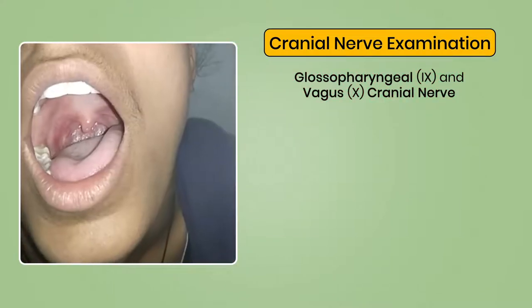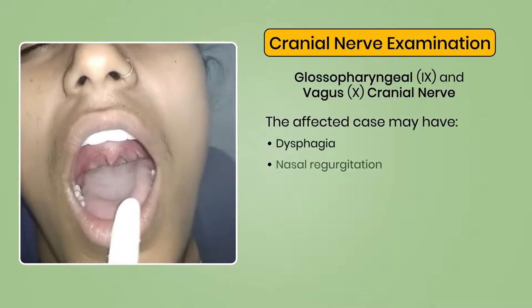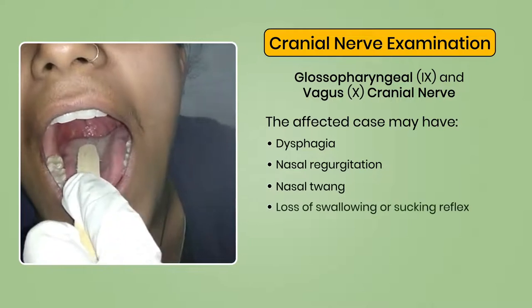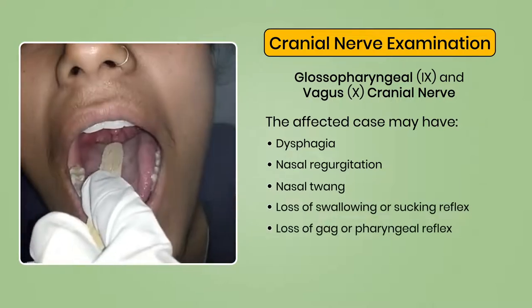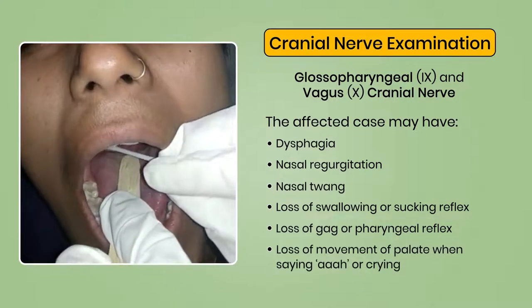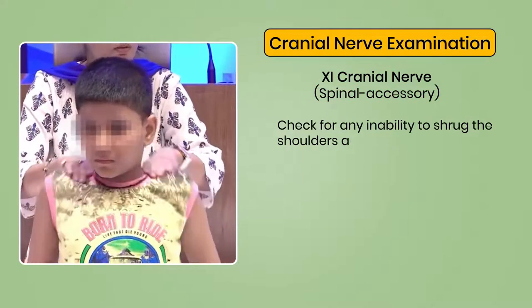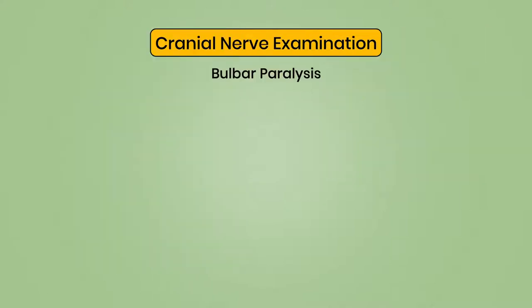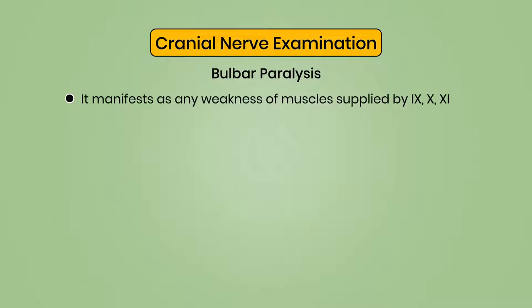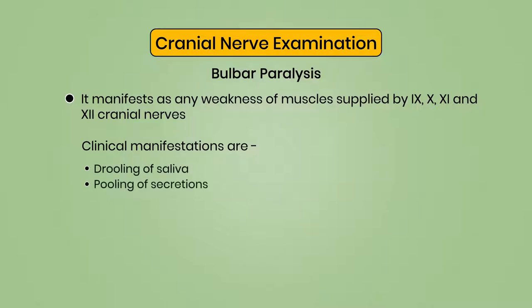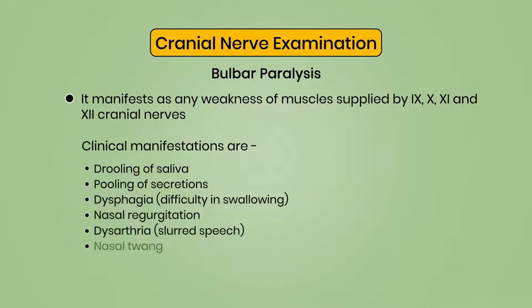Glossopharyngeal and vagus cranial nerves: the affected child may have dysphagia, nasal regurgitation, nasal twang, loss of swallowing or sucking reflex, loss of gag or pharyngeal reflex, and loss of movement of the palate when saying 'aaah' or crying. 11th cranial nerve or spinal accessory: check for inability to shrug the shoulders against resistance and weakness in rotation of the chin to the opposite side. Bulbar paralysis manifests as weakness of muscles supplied by the 9th, 10th, 11th, and 12th cranial nerves. Clinical manifestations include drooling of saliva, pooling of secretions, dysphagia, nasal regurgitation, dysarthria or slurred speech, nasal twang, and possible involvement of respiratory and vasomotor centers.